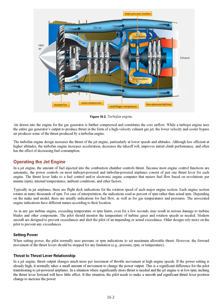Setting power. The pilot normally uses pressure or RPM indications to set maximum allowable thrust. The forward movement of the thrust levers should be stopped for any limitation — pressure, RPM, or temperature. In a jet engine, thrust output changes much more per increment of throttle movement at high engine speeds. If the power setting is already high, a small movement changes power output significantly. When more thrust is needed at low RPM, the pilot must make a smooth and significant thrust lever position change rather than inching it forward.